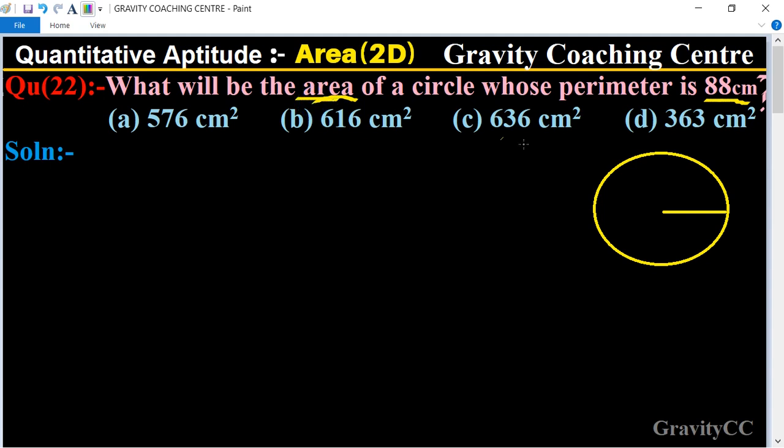So first of all, we find the radius r. According to the question, perimeter is given 88 centimeter. And we know that the formula of perimeter is 2πr equal to 88, so cancel by 2, 44 times.